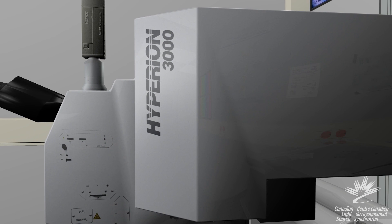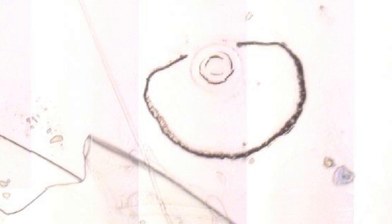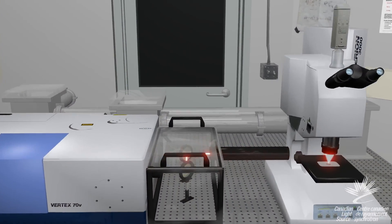The Hyperion 3000 is also equipped with a 64x64 pixel focal plane array detector, which allows 4096 spectra to be measured concurrently. This technology allows users to quickly collect data over large areas.